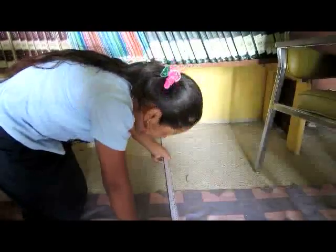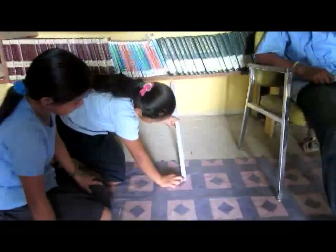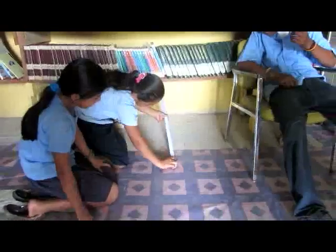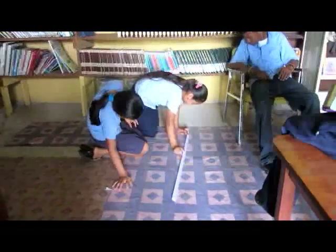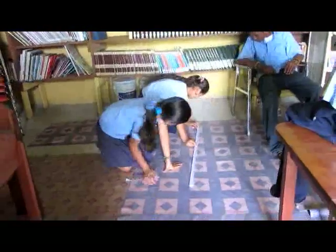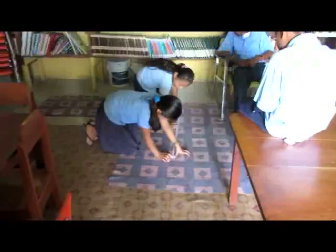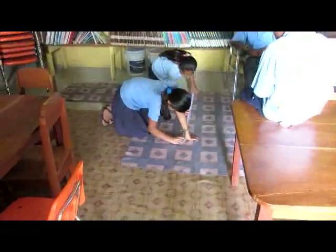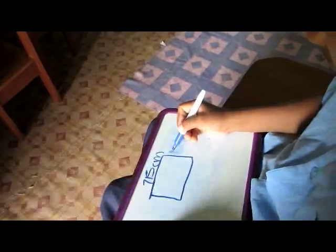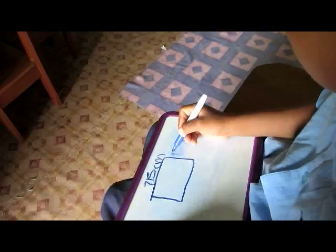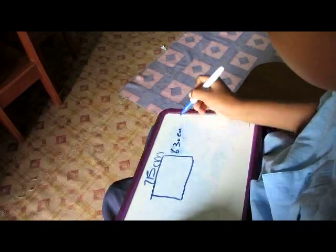Let's measure the width. One hundred... one meter... two meters... The width is six hundred and thirty centimeters.